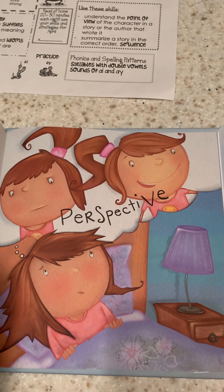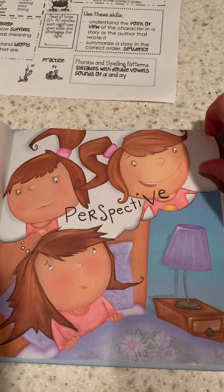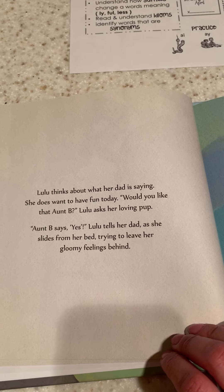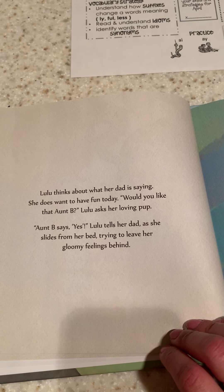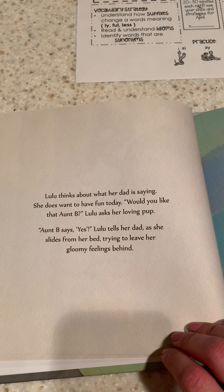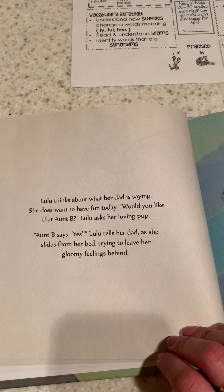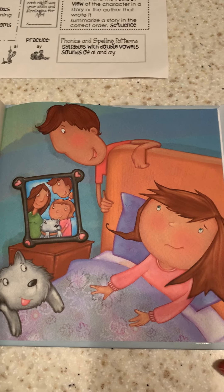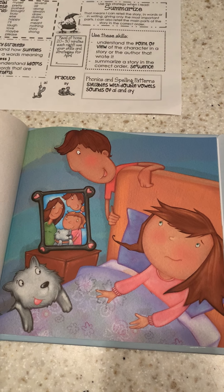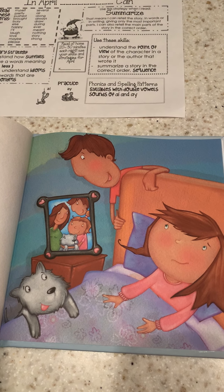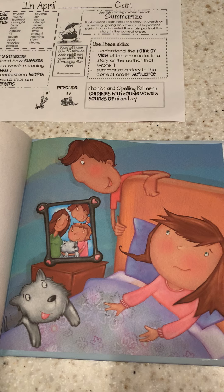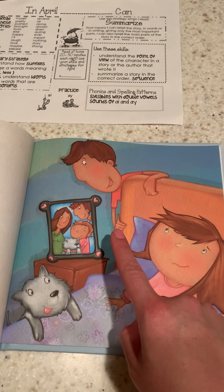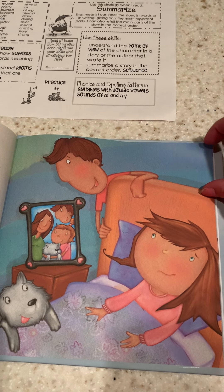Which one do you think Lulu is going to pick? Lulu thinks about what her dad is saying. She does want to have fun today. Would you like that, Aunt Bea? Lulu asks her loving pup. Aunt Bea says yes, Lulu tells her dad, as she slides from her bed, trying to leave her gloomy feelings behind. She's going to try to get up — she has a half smile. She's going to try to have a great day. The dog is sure going to have a great day.